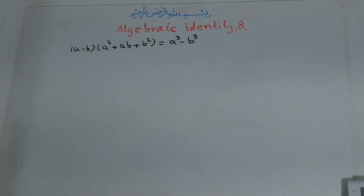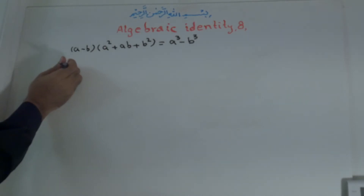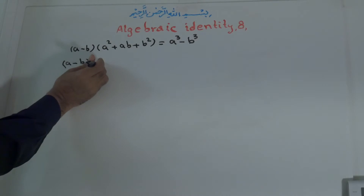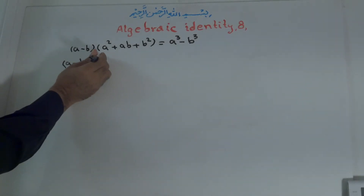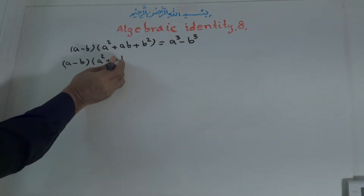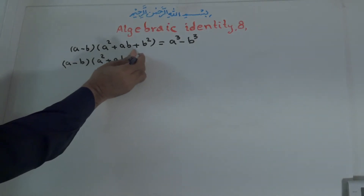We said this is an identity. So now we must prove whether this is right or not. To prove that, we multiply these two: one is a binomial with a trinomial — A minus B times A² plus AB plus B².